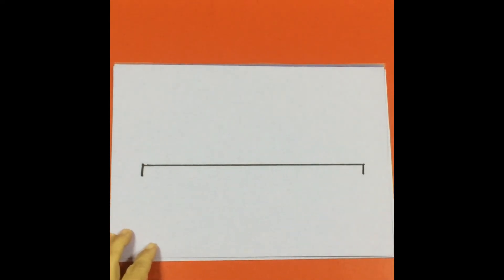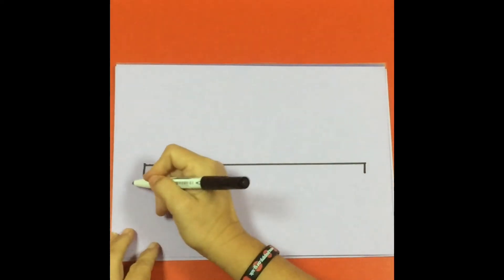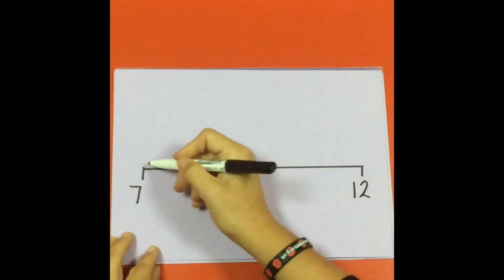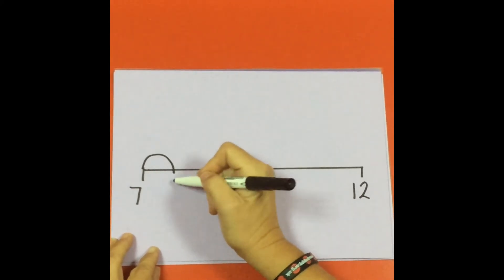Now the number line is exactly the same as before, except we put both numbers on there: the smaller number of 7 and the larger number of 12. And then we have to count to the next one.